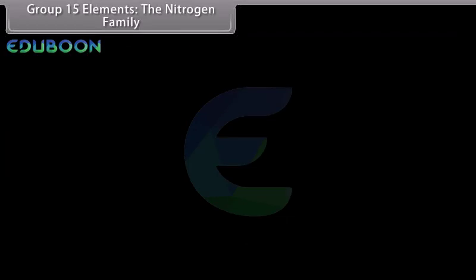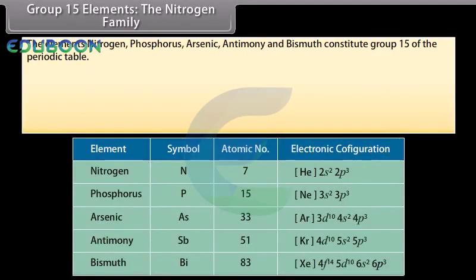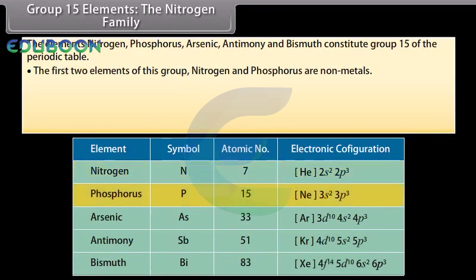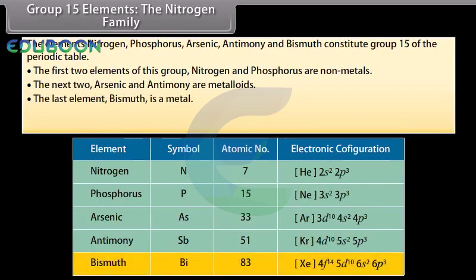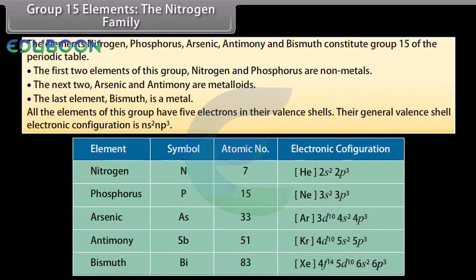Group 15 elements — the nitrogen family. The elements nitrogen, phosphorus, arsenic, antimony and bismuth constitute group 15 of the periodic table. The first two elements, nitrogen and phosphorus, are non-metals. The next two, arsenic and antimony, are metalloids. The last element, bismuth, is a metal. All the elements of this group have 5 electrons in their valence shell, with a general valence shell electronic configuration of NS2, NP3.